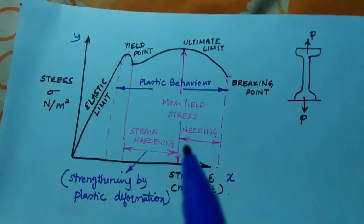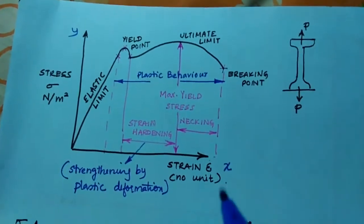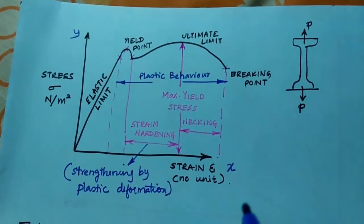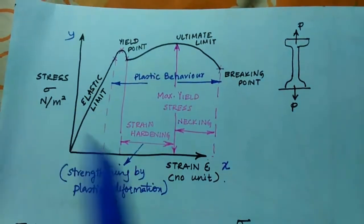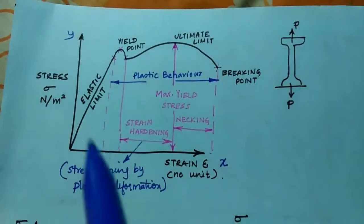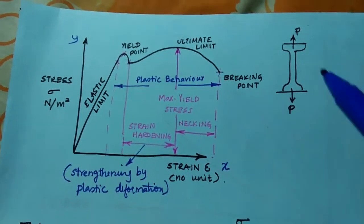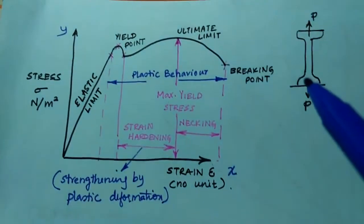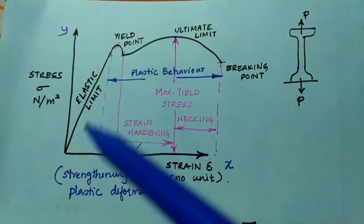What is necking? The region from the ultimate limit to the breaking point is the necking region. What is the elastic limit? As per Hooke's Law, within the elastic limit stress is directly proportional to strain. When a load is applied to a material and we release that load and the material has the capability to come back to its original position — that is the elastic limit, also called the limit of proportionality.